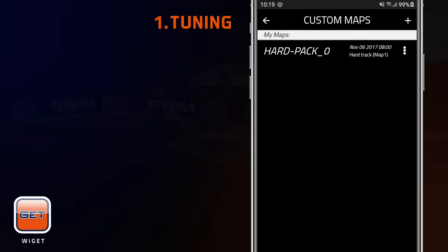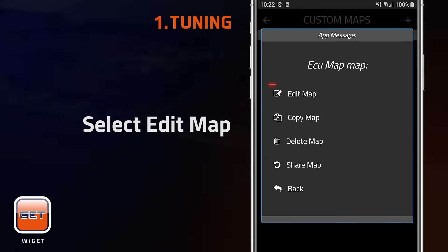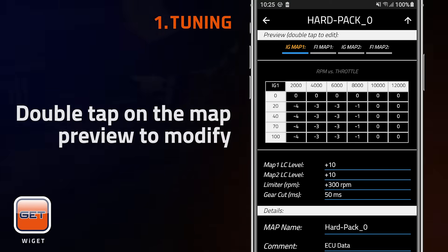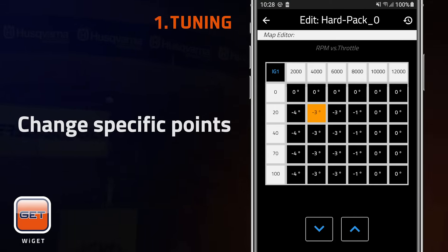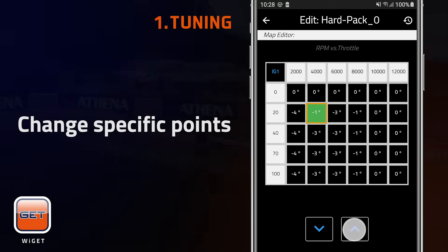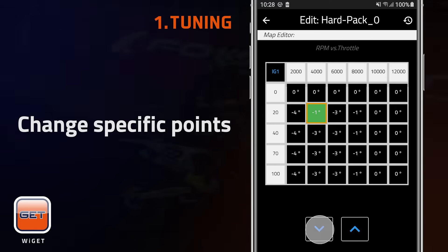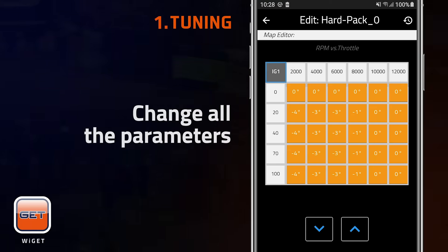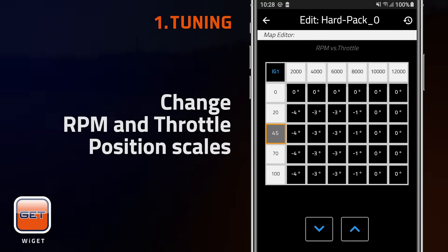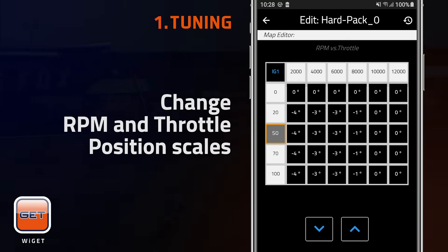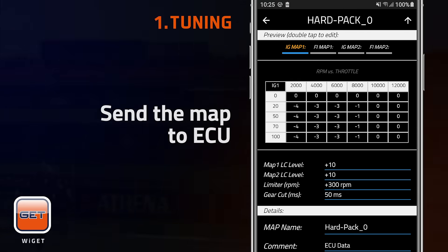Open the menu and select Edit Map. You will be able to modify the configuration by double tapping on the map preview. Using the buttons up and down, it is possible to change specific points or all the parameters. It is also possible to change RPM and throttle position scales. Tap on the upper left arrow icon to go back to the previous screen, and tap the upper right arrow icon to send the map to the ECU.